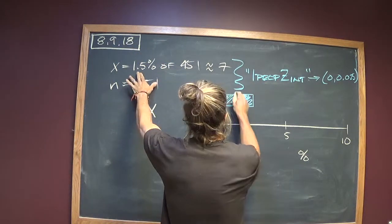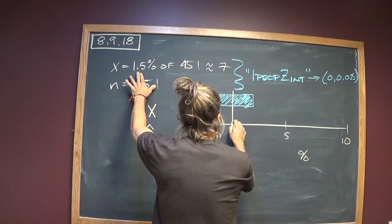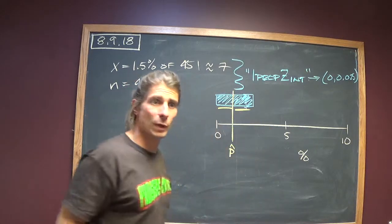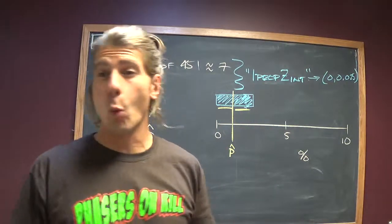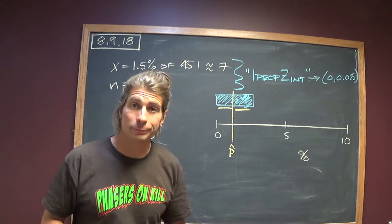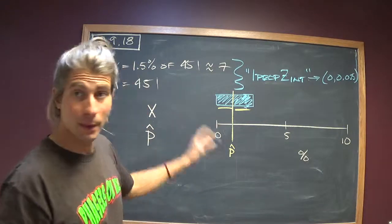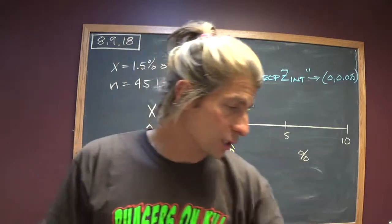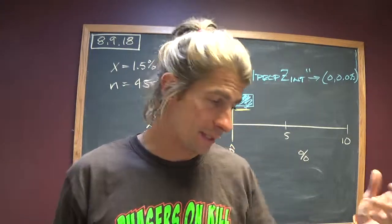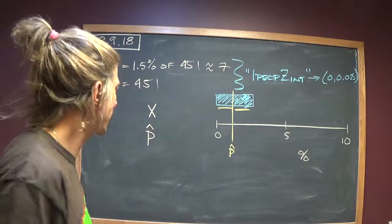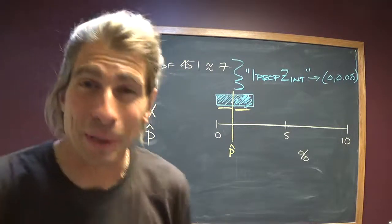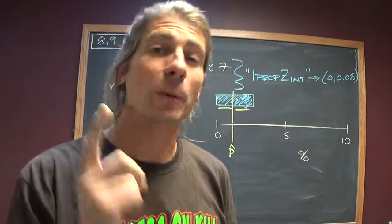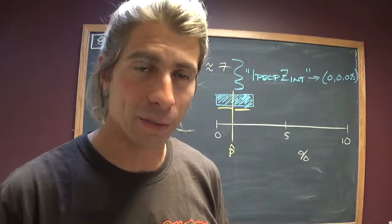So the margin of error is going to be halfway between P hat and either endpoint. So you're looking at roughly a 1.25% margin of error between P hat and the endpoint. If you want to get more exact, just take the average of the endpoints and that will tell you what the error bound is. No, excuse me, I'm wrong. If you take the average of the endpoints, you'll get P hat. The distance between P hat and either endpoint will give you the error bound.